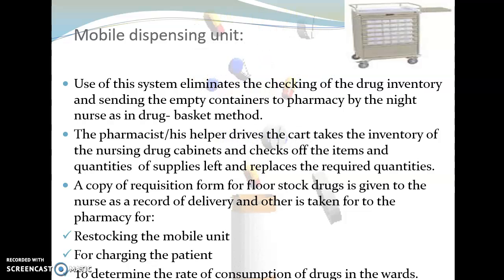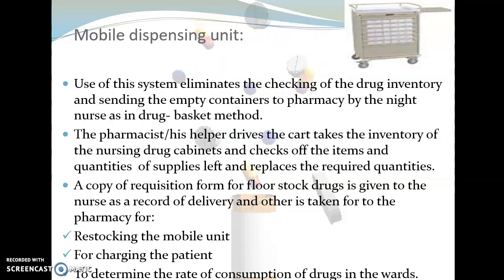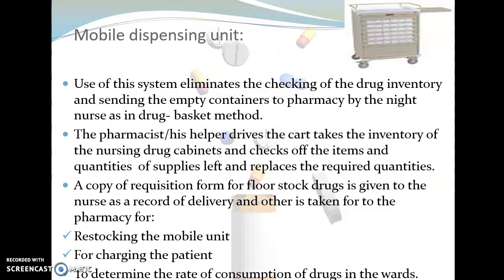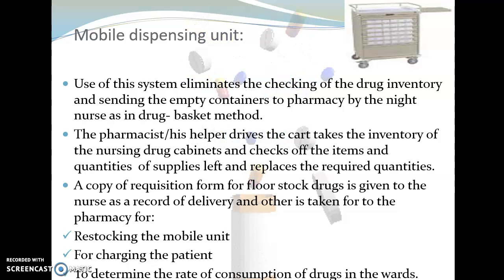The second method is the mobile dispensing unit. This system involves checking all drug inventories and sending empty containers to the pharmacy by the night nurse, similar to the drug basket method. The pharmacist or helper drives the cart, takes inventory from the nursing cabinet, checks all items and quantities, and replaces them with the required quantity. A copy of the requisition form is given to the nurse as a delivery record, and another copy is kept by the pharmacy for restocking, patient charging, and tracking the rate of drug consumption in the ward.